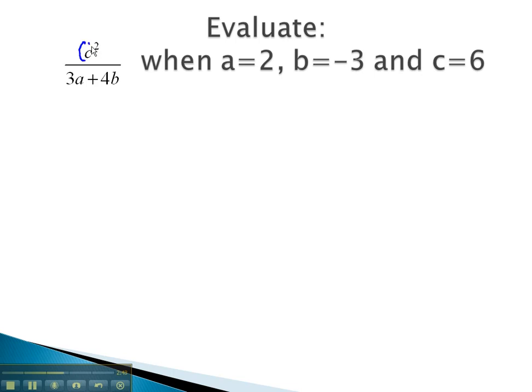Here, we have c squared over 3a plus 4b. We can replace the c with what it represents 6, the a with what it represents 2, and the b with what it represents negative 3. When we do that, the c is now a 6 squared over 3a, which is now a 2, plus 4b, which is now a negative 3. And we end up with this big order of operations problem.